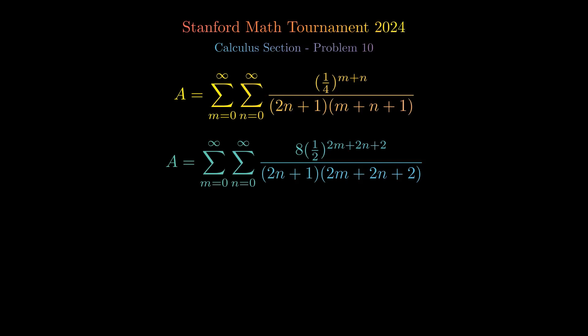all divided by 2n plus 1 times 2m plus 2n plus 2. This hints at an integral representation, setting the stage for a more intuitive approach.